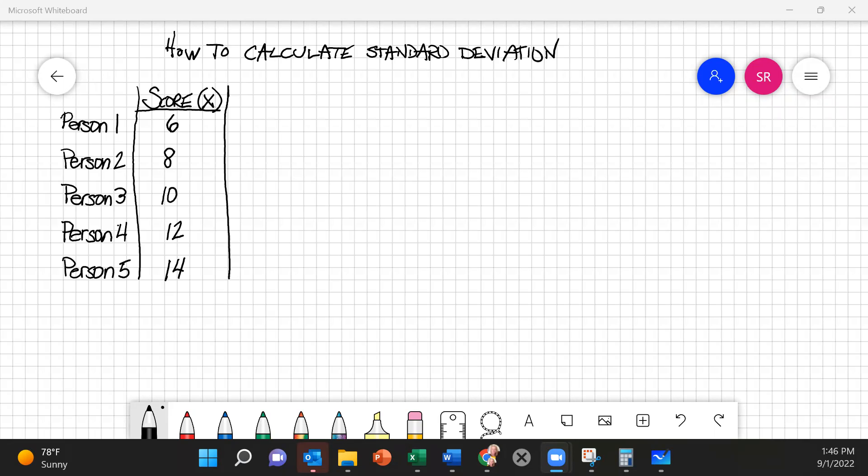This short demonstration will show you how to calculate standard deviation. You'll see here that we have five individuals listed as person one, person two, person three, person four, and person five. Each of their scores are reported. The first person got six, the next eight, the next 10, the next 12, and the last one 14.